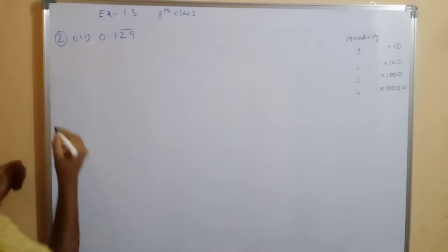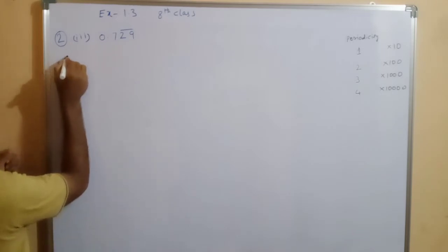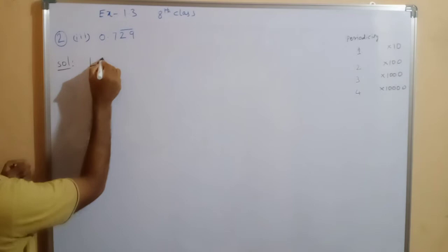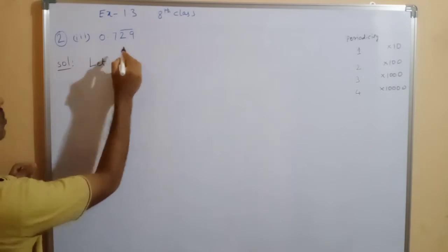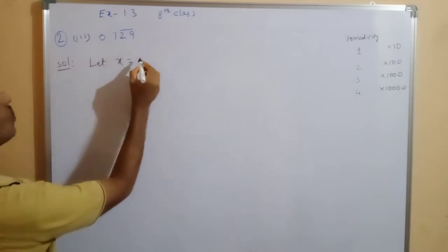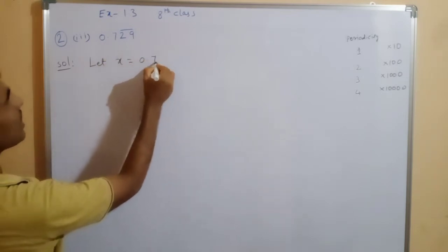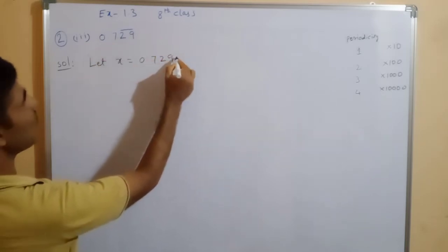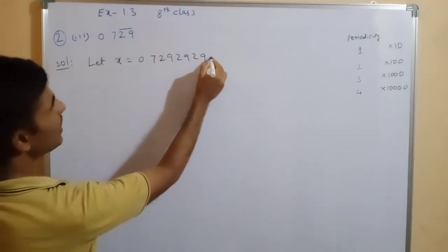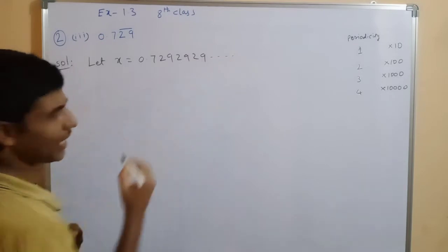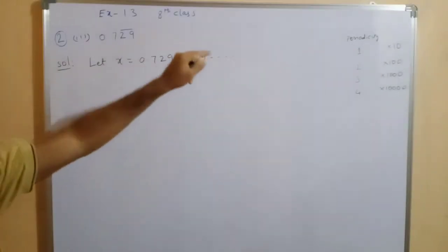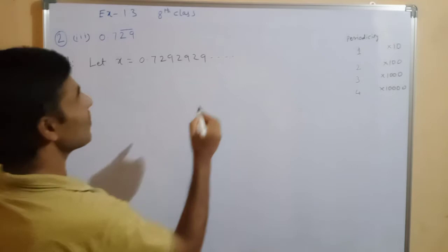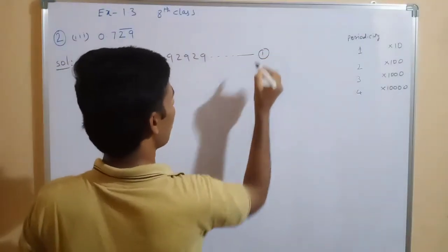See the solution here. First, let x equal to 0.7̄2̄9̄ — repetition will come: 29, 29, 29 and so on. So 29 is repeating. Take this as Equation number 1.